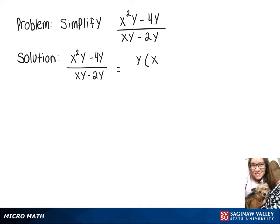On top, we can factor out a y, leaving x squared minus 4. On bottom, we can also factor out a y, leaving x minus 2.